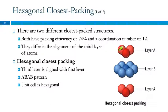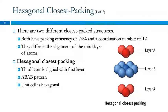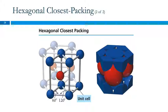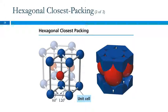In hexagonal closest-packed, the first and third layers are directly above each other — an A, B, A, B pattern. This gives a hexagonal unit cell where the angles are not 90 degrees. The unit cell here is a hexagonal shape — that's the hexagonal cell we mentioned very briefly.